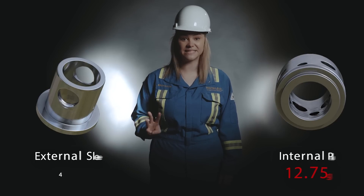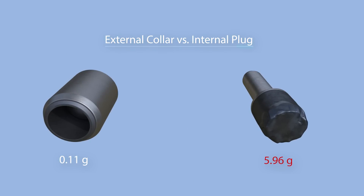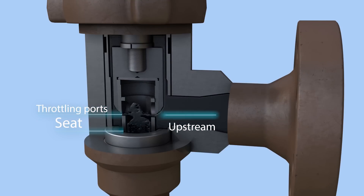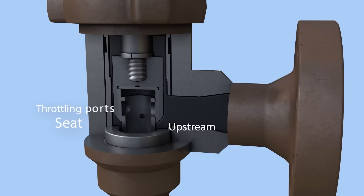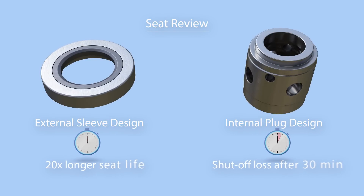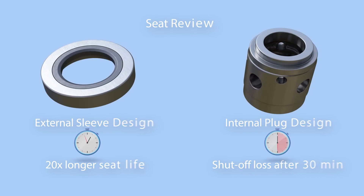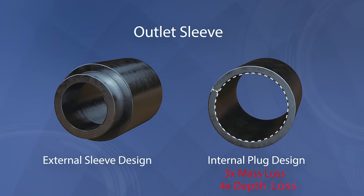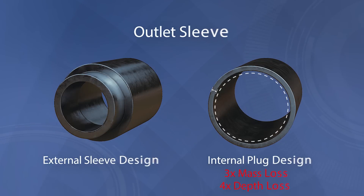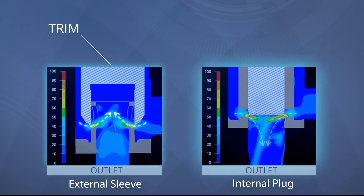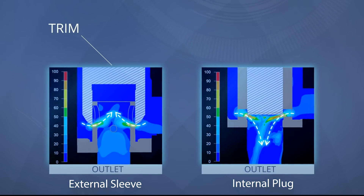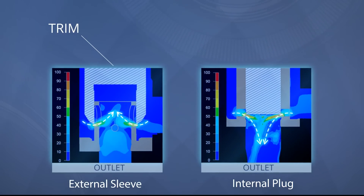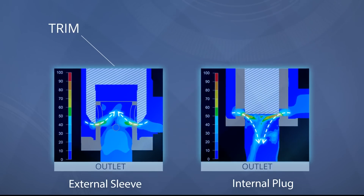When the engineers compared the external sleeve to the internal plug, they observed that the plug lost 54 times more material. By placing the seat upstream of the throttling ports, the external sleeve valve was able to maintain shutoff capability by the end of testing and showed 20 times longer seat life than the internal plug design. The material loss of the outlet sleeve was 3.2 times higher and the depth loss was 4 times larger in the internal plug valve. CFD analysis showed that high-velocity fluid jets in the internal plug were directed into the outlet, whereas in the external sleeve valve they were directed towards the valve trim, away from the outlet.